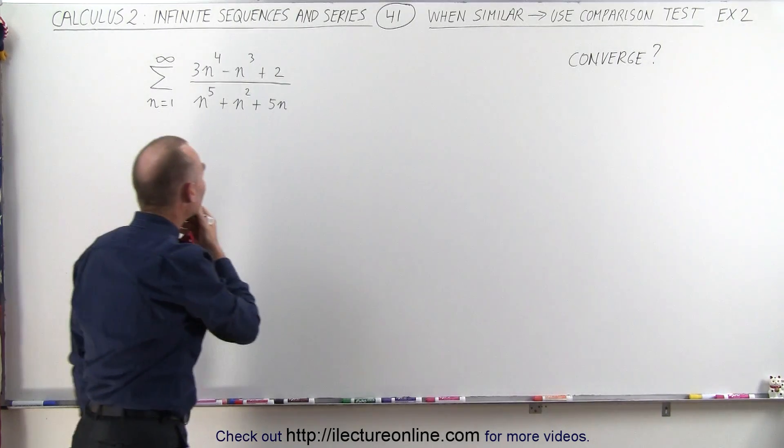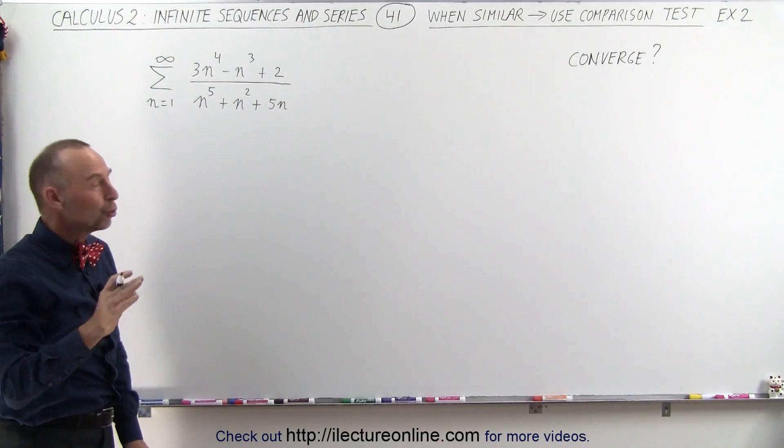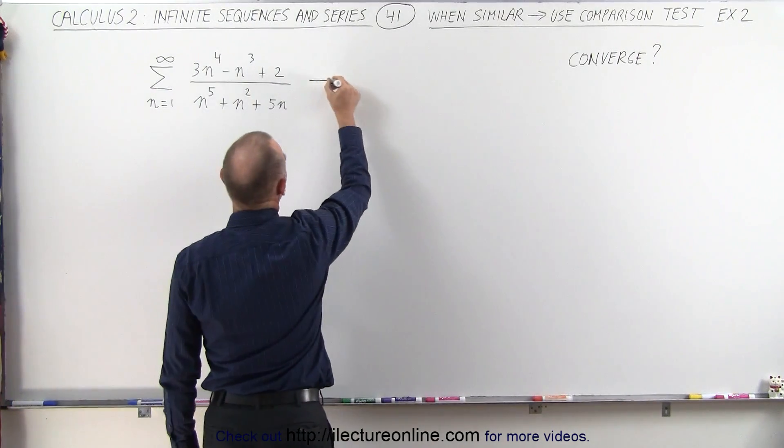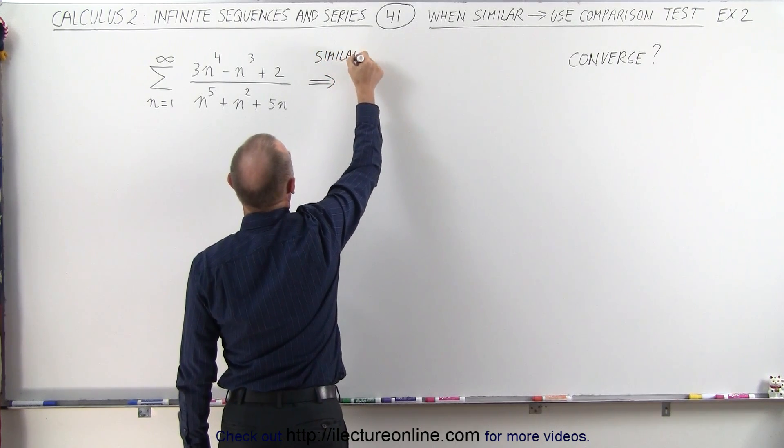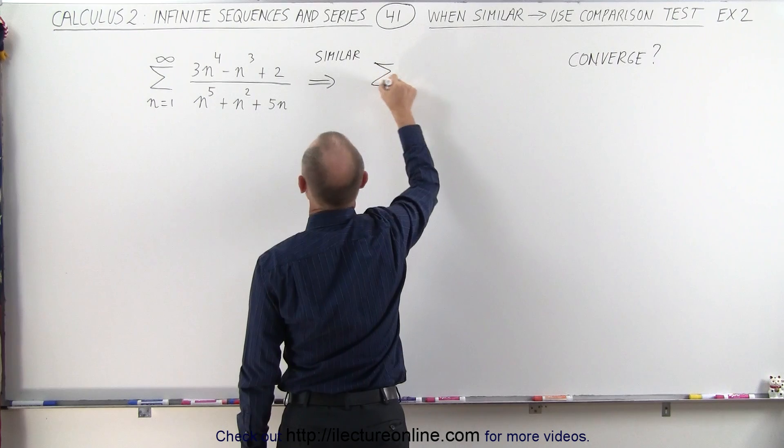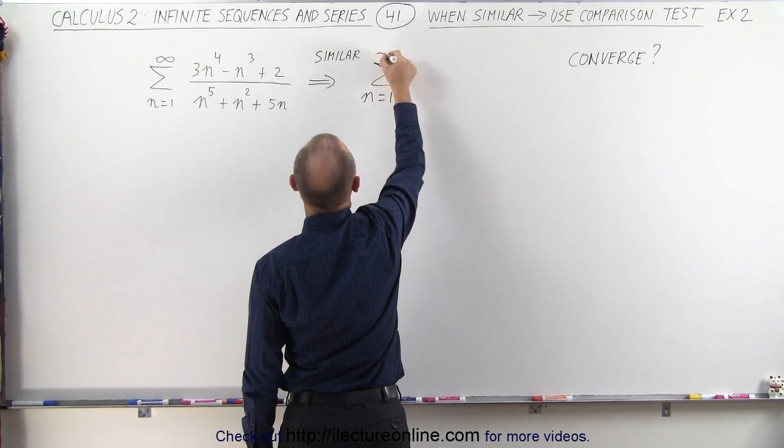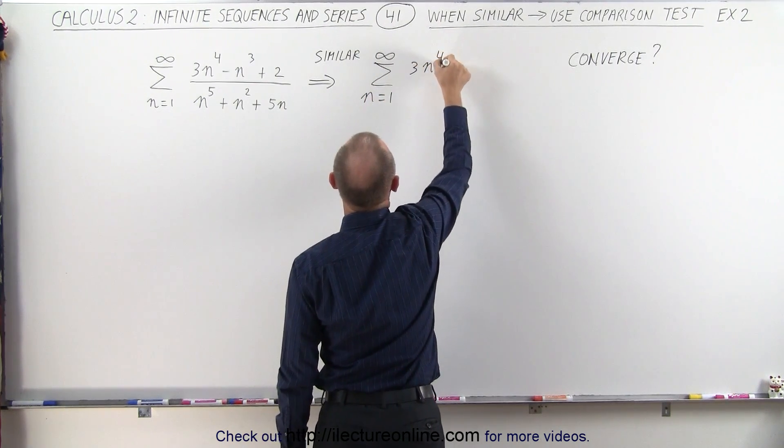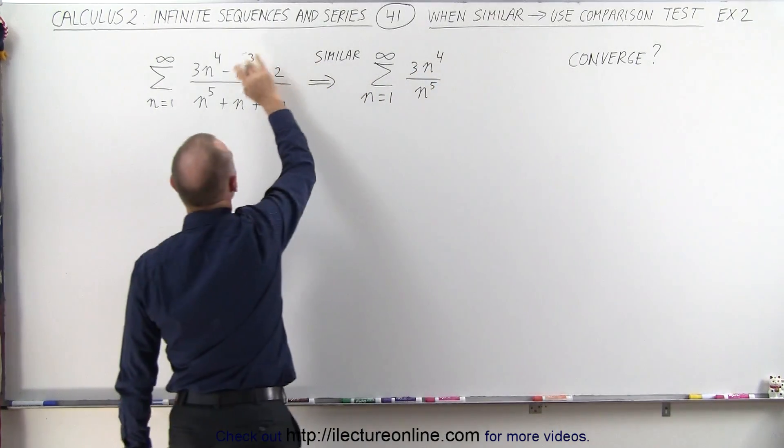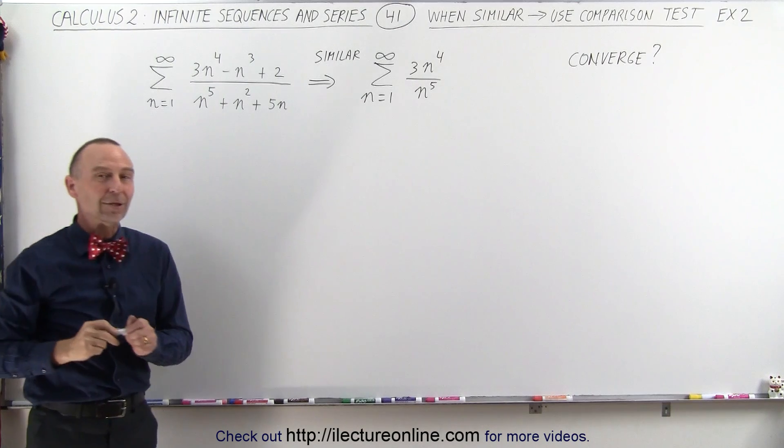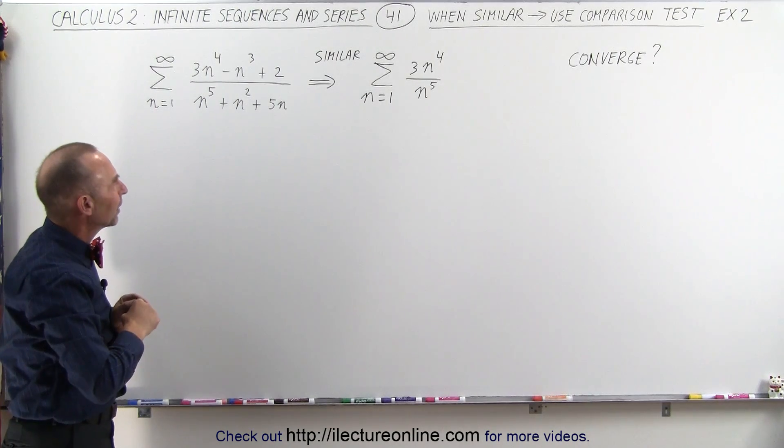What you can say is that it looks very similar to something like this. So it is similar to the following: an infinite sum from n equals 1 to infinity of 3n to the 4th divided by n to the 5th, and we drop off the other two terms in the numerator and the other two terms in the denominator.